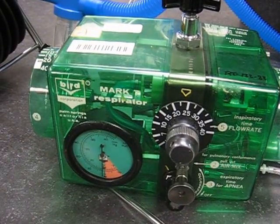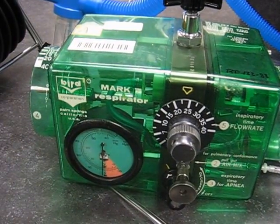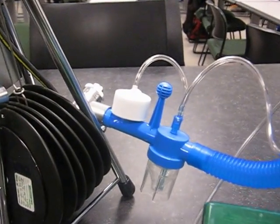Hi, I'm Kelly Busby. This is a close-up of the IPPP machine. This is a Bird Mark 7. This is our Tesla. Here is our circuit.